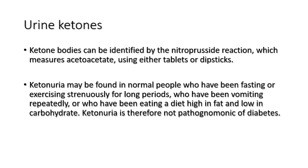The presence of ketones in the urine indicates the absence or loss of effective insulin function, because insulin is the most important and most powerful inhibitor of ketogenesis. It is important in the diagnosis of diabetic ketoacidosis. However, ketones may also be found in normal people who have been fasting, exercising strenuously for long periods, vomiting repeatedly, or eating a diet high in fat and low in carbohydrates. In these physiological conditions, there may be a mismatch between glucose and fat metabolism, so urine ketones are not pathognomonic for diabetic ketoacidosis.